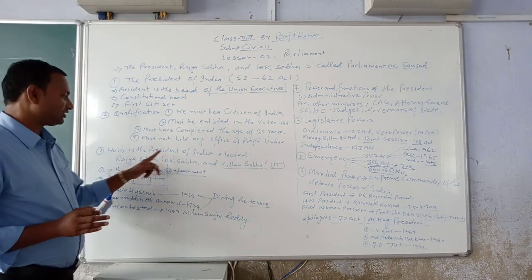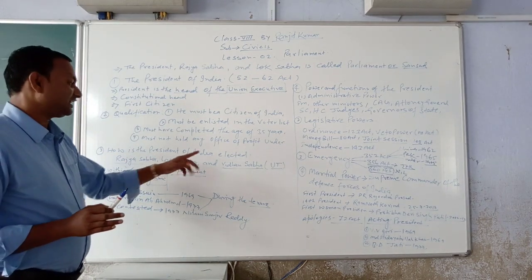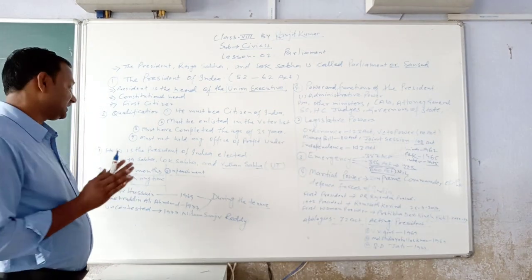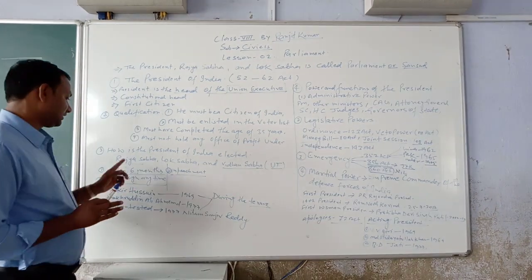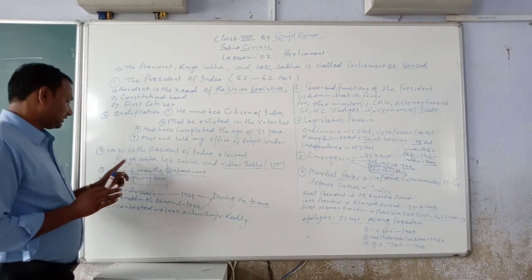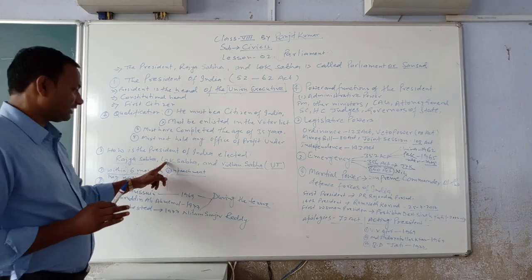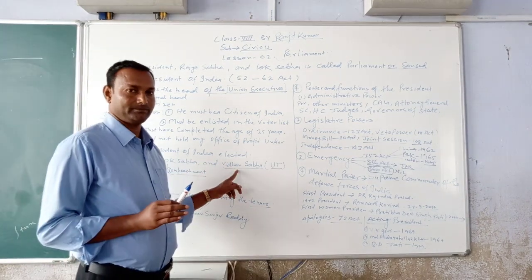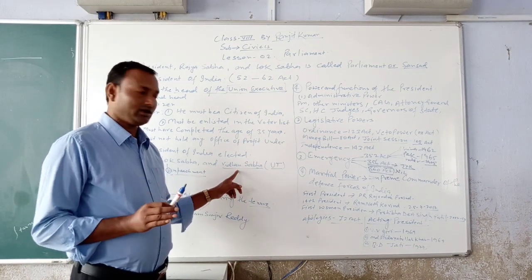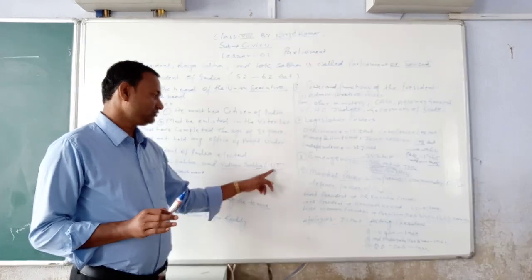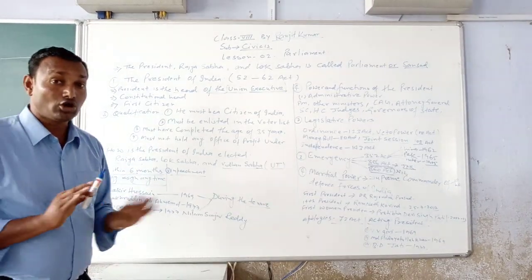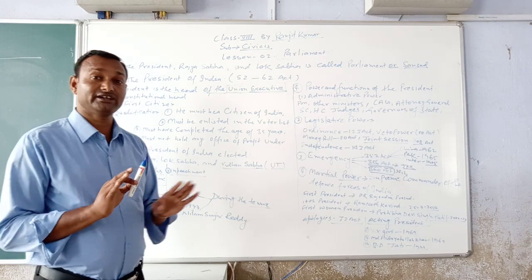How is the President of India elected? The President's election is conducted by elected members of Rajya Sabha, Lok Sabha, and Vidhan Sabhas, including Union Territories. Nominated members do not participate in this election.